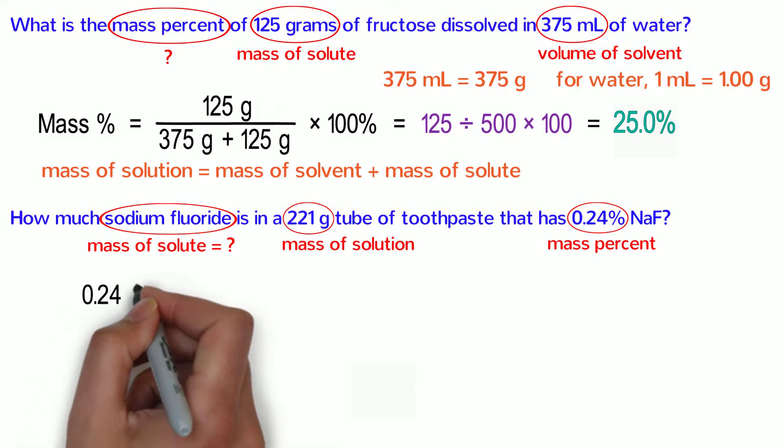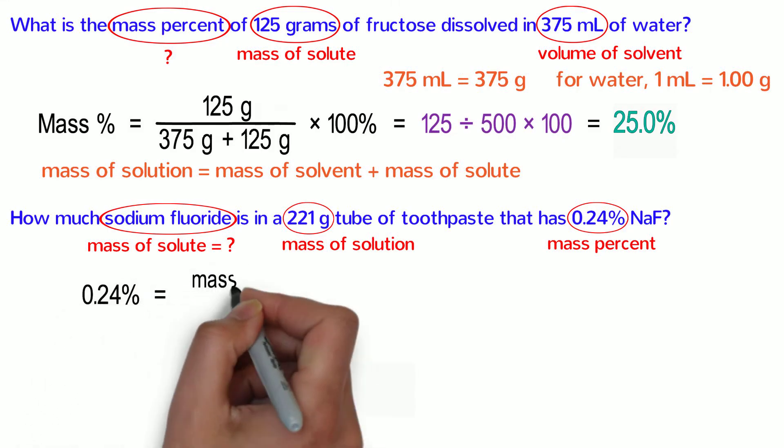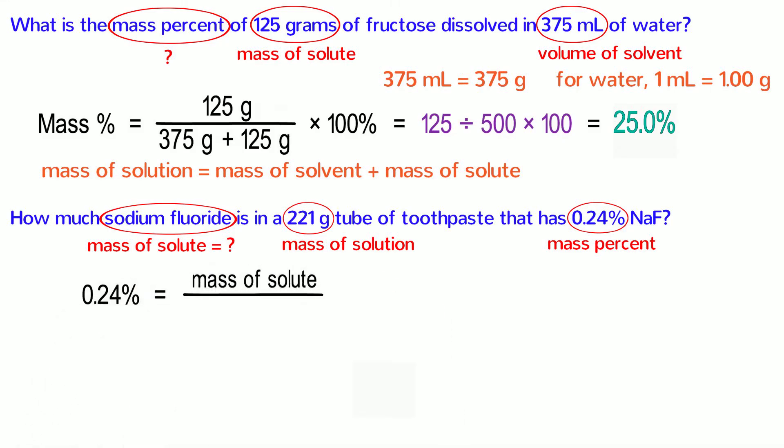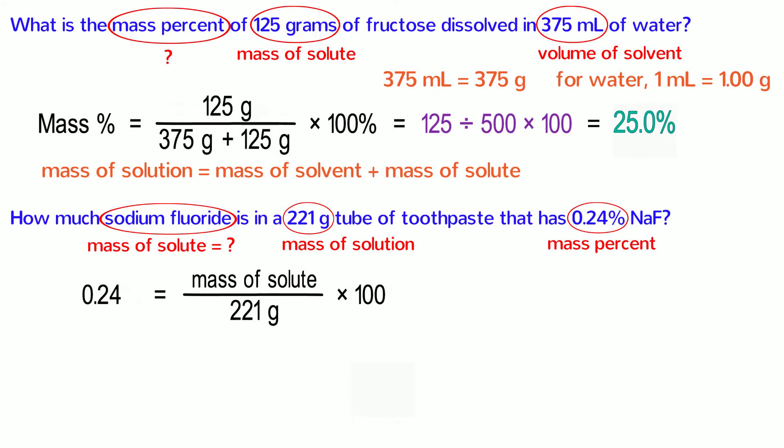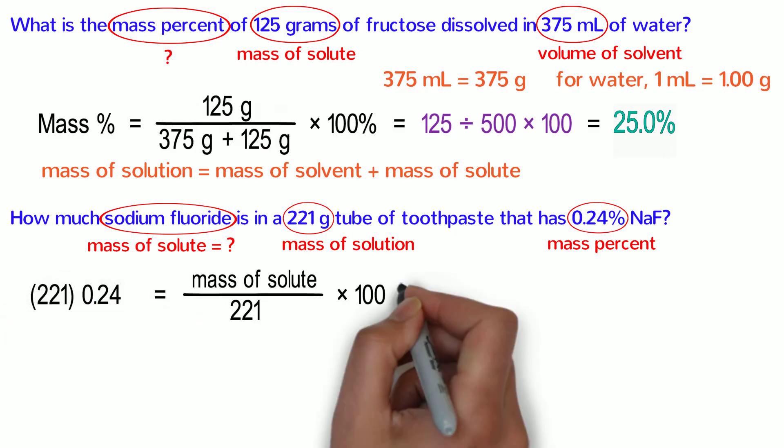We can set the problem up the same as always. The mass percent is 0.24%, which is equal to the mass of the solute divided by the mass of the solution, or 221 grams, all multiplied by 100%. The only difference this time is that what we're solving for is on the right side of the equation, so we will need to do a bit of rearranging. First, let's remove the units because percent is on both sides of the equation and we know that the mass of the solute has the units of grams.